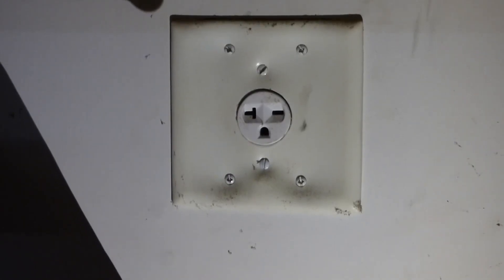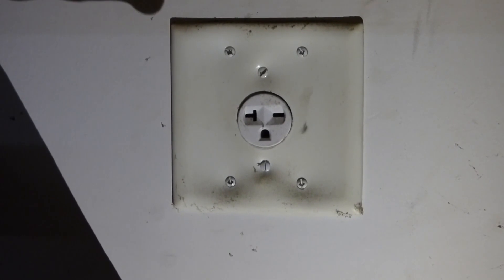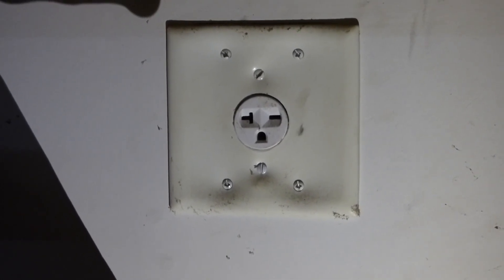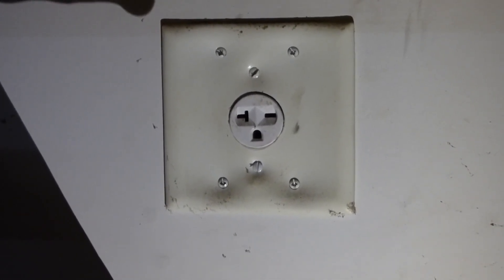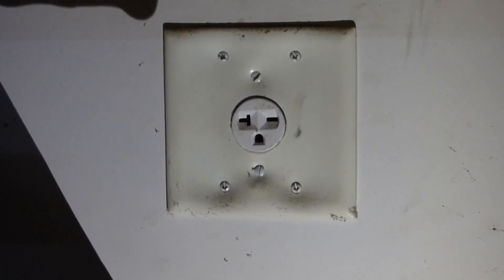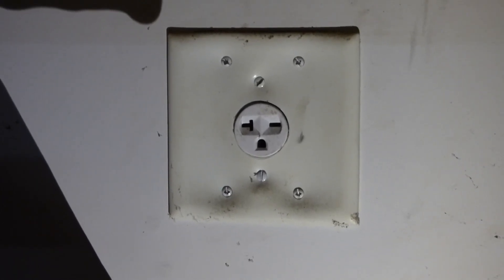Here's an outlet that overheated. You can see the plastic plate has melted, and it's actually a little bit of a brown color. Make sure your wire connections are tight.